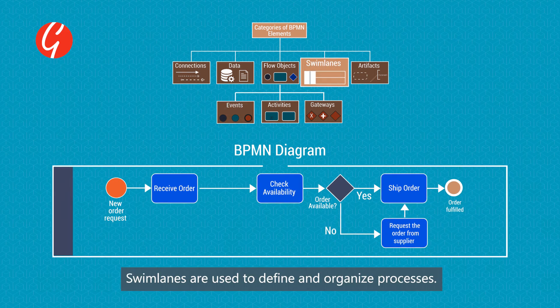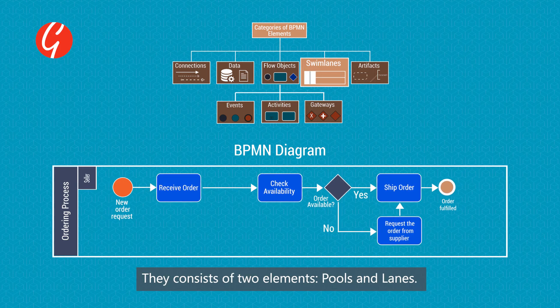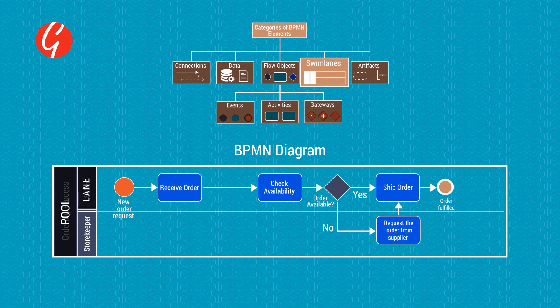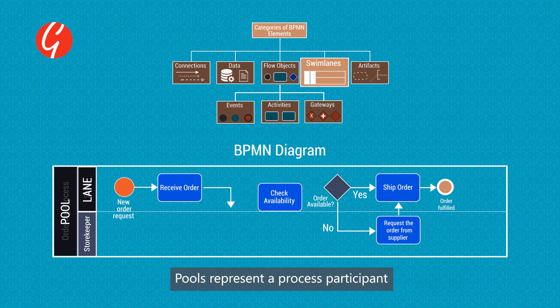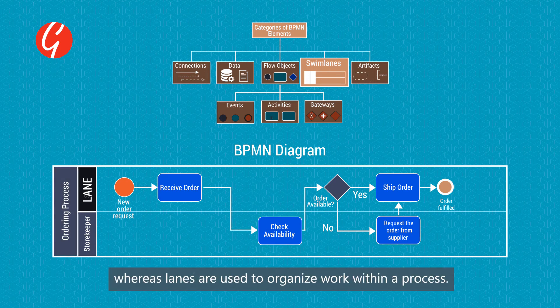Swim lanes are used to define and organize processes. They consist of two elements: pools and lanes. Pools represent a process participant and may include a process, whereas lanes are used to organize work within a process.